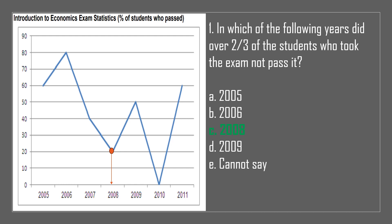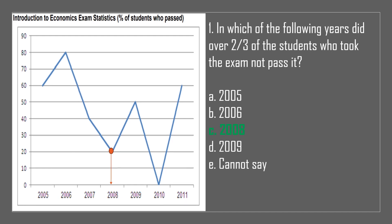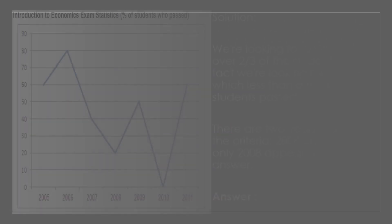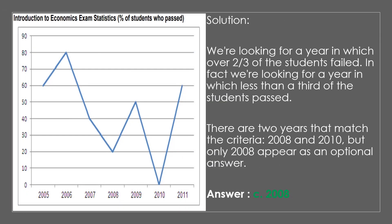The answer is C, 2008. Solution: We're looking for a year in which over two-thirds of the students failed. In fact, we're looking for a year in which less than a third of the students passed. There are two years that match the criteria — 2008 and 2010 — but only 2008 appears as an optional answer.